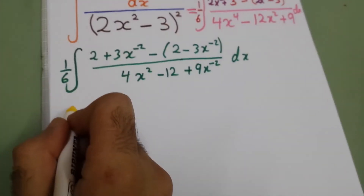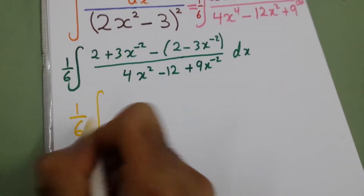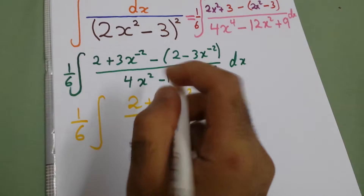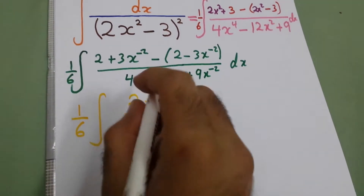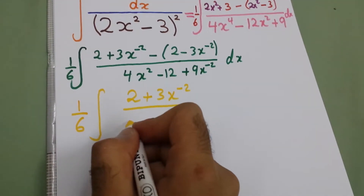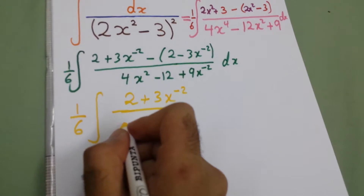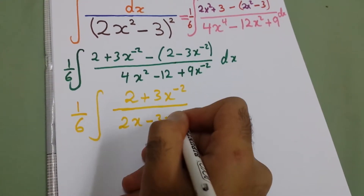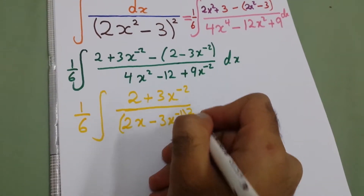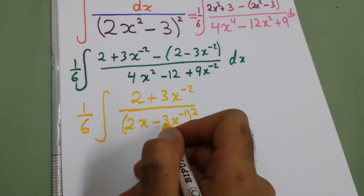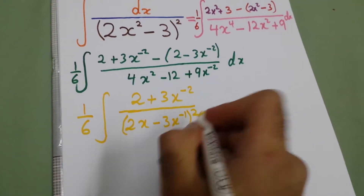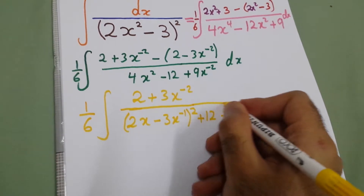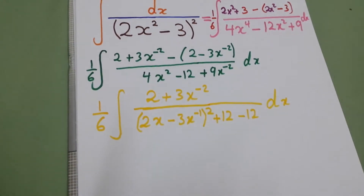So the integral will be 1 over 6. For the first part, we take the two terms (2 + 3x⁻²). To make this the derivative, we complete the square to get (2x − 3x⁻¹)². Here we subtract 2 times 2 times 3, which is 12, so we subtract 12 and we also have minus 12. This gives the first integral.